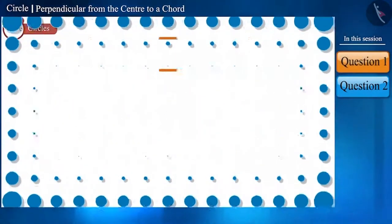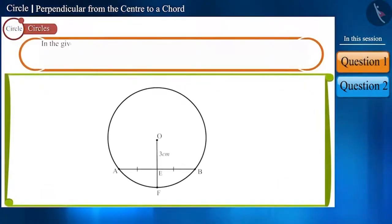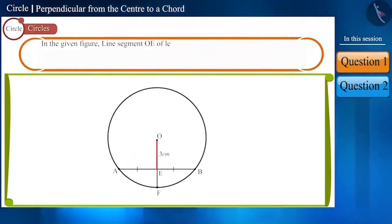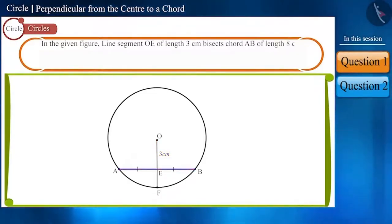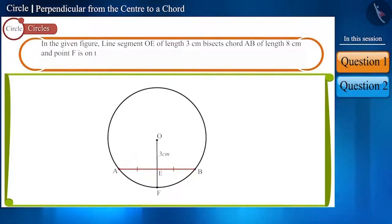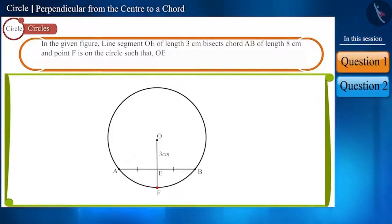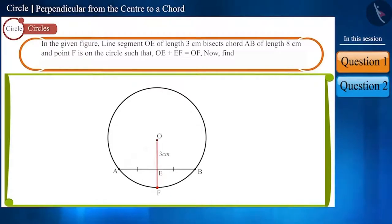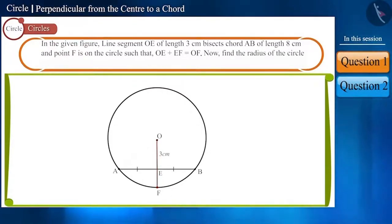Let's start. In the given figure, line segment OE of length 3 cm bisects chord AB of length 8 cm. Point F is on the circle such that OE plus EF is equal to OF. Now, find the radius of the circle and the length of EF.